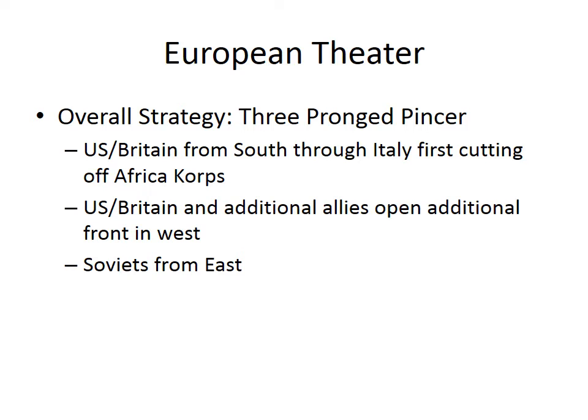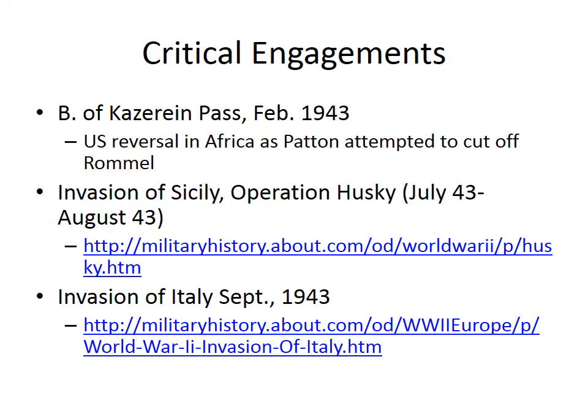In the European theater, the Allies developed a three-pronged pincer attack on Germany. First, the U.S. and British would launch a combined invasion of the Italian mainland — requiring taking Sicily first — cutting off Rommel and the Afrika Korps in Africa. The Soviet Union would meanwhile push the Germans back in the east. Then at an opportune moment, the British and Americans would open another offensive in Normandy, France.